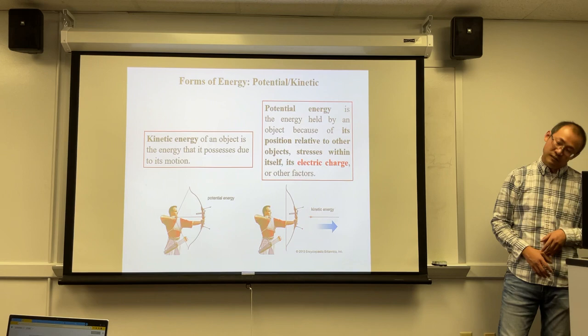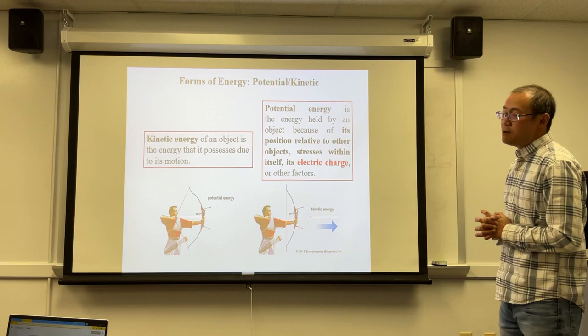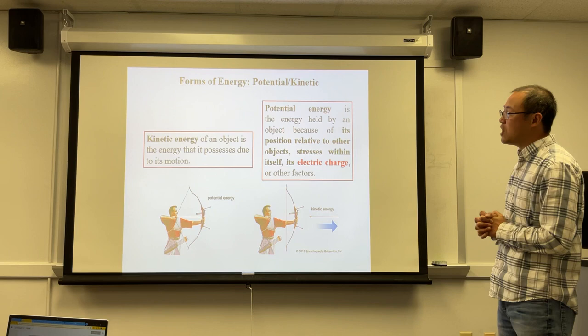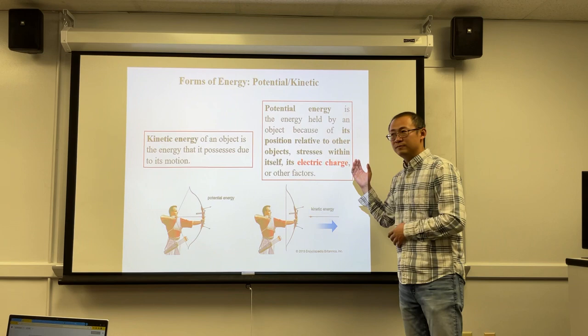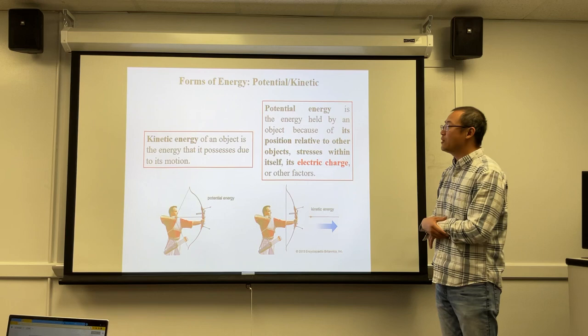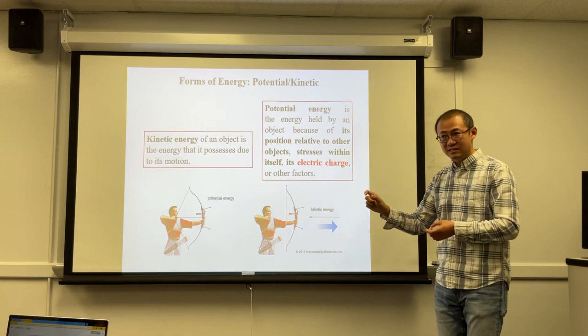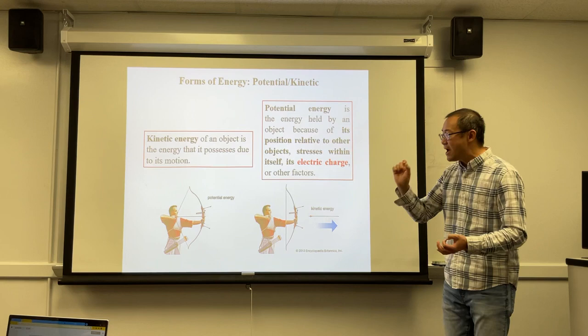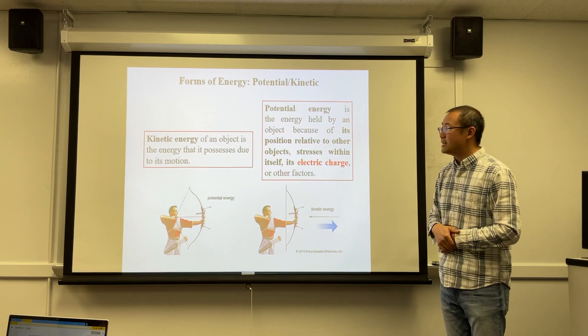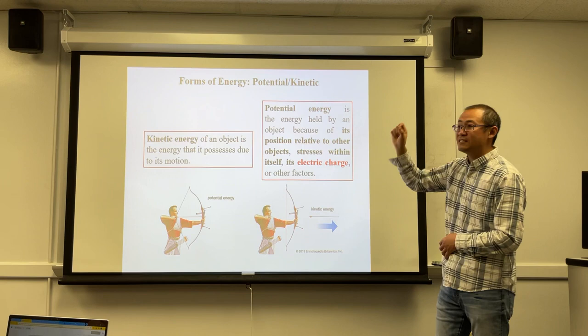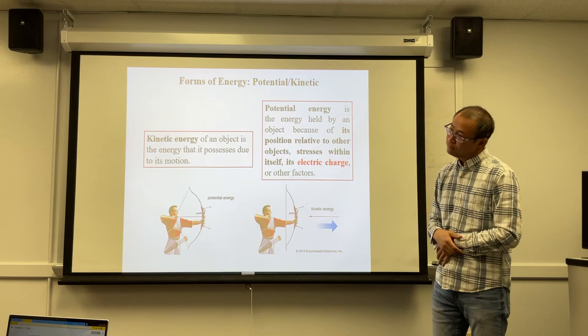Energy can be mainly classified into two types: kinetic energy and potential energy. Kinetic energy is the energy of motion. If an object such as an arrow has mass and is in motion, that object possesses kinetic energy. As long as an object has mass and is moving, we call that energy kinetic energy.